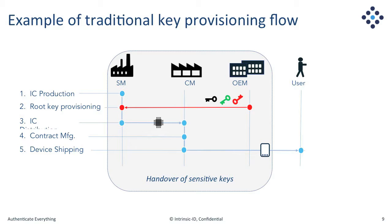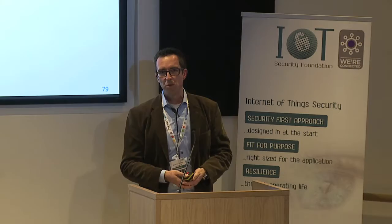This picture depicts a typical production flow: an IC manufacturer produces chips, a contract manufacturer integrates them into a device on behalf of an OEM. In the traditional method, the OEM has to give his keys to the silicon manufacturer for insertion — this handover brings liability and cost. Ideally, we want a solution that provides high security but is also flexible, provisionable at any stage in the production chain, low cost, and deployable across the wide range of IoT chips.